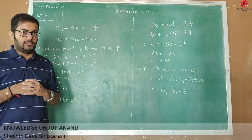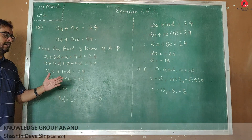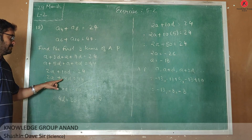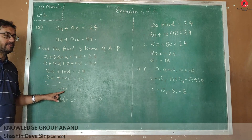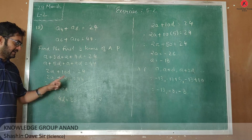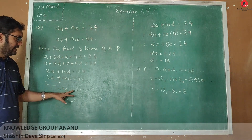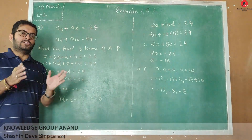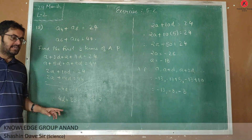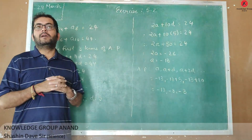Now we will use the elimination method. By changing the sign, the term with A — that is 2A — gets cancelled. 10D minus 14D gives minus 4D, and 24 minus 44 gives minus 20. So the value of minus 4D is minus 20. Changing the sign on both sides, we get 4D equal to 20, which means the value of D is 5.